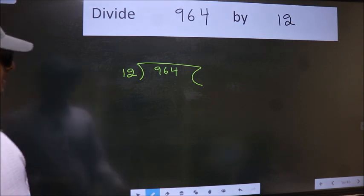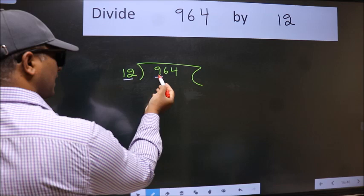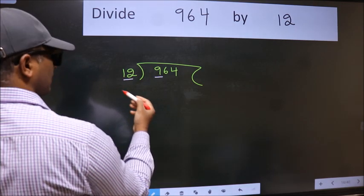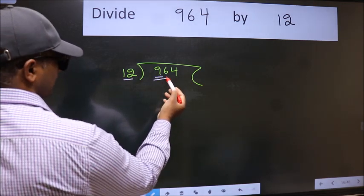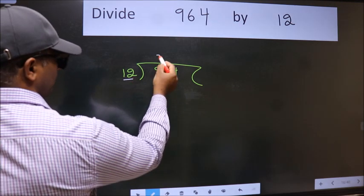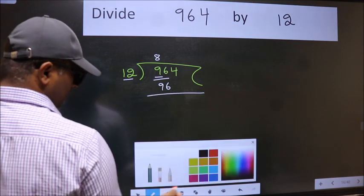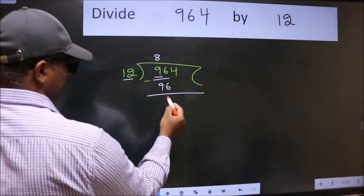Next. Here we have 9 and here 12. 9 is smaller than 12. So take two numbers, 96. When do we get 96 in 12 table? 12×8 is 96. Now we should subtract. We get 0.